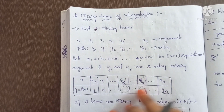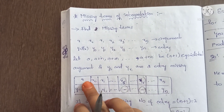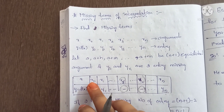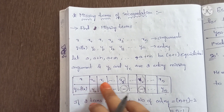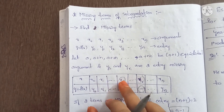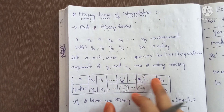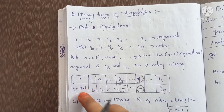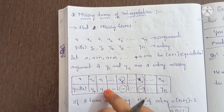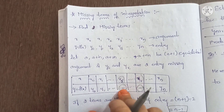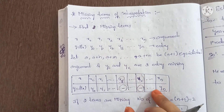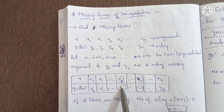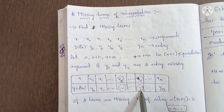We have a table with x terms: x0, x1, xs, xr, xn, and corresponding y equals f of x values: y0, y1, and two blank entries, then yn. So here we have two terms missing.